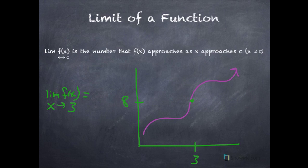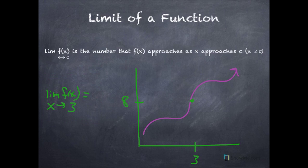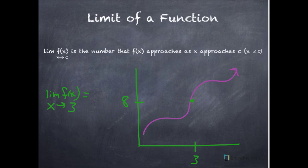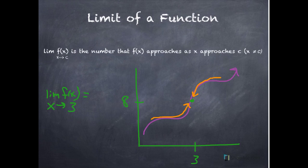Here's a quick example looking at a graph. This question is asking what is y getting closer to as x gets closer to 3. If we were traveling up this curve, getting closer and closer to x equals 3, we can approach from both sides — what is y getting closer and closer to? Well, it's getting closer to 8. So as x approaches 3, y approaches 8.